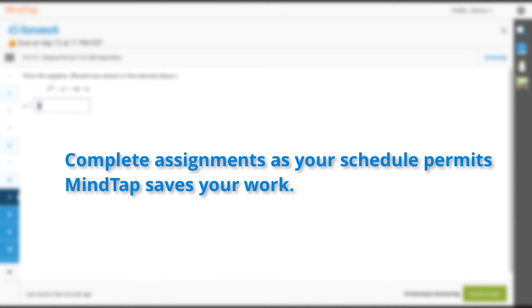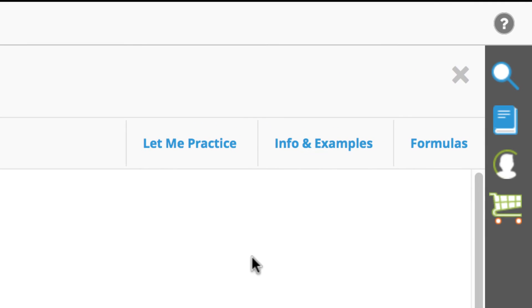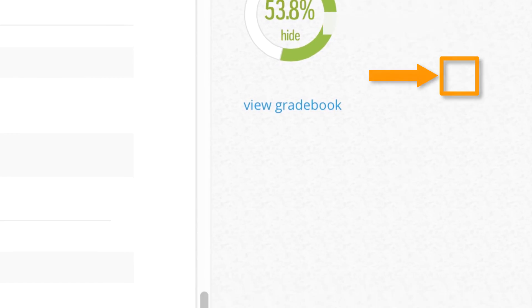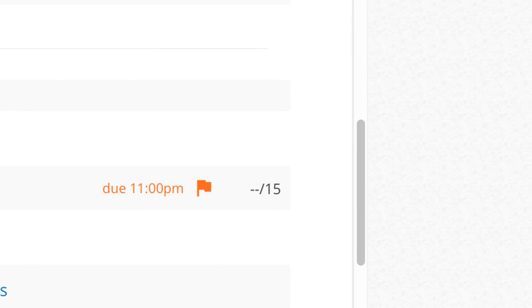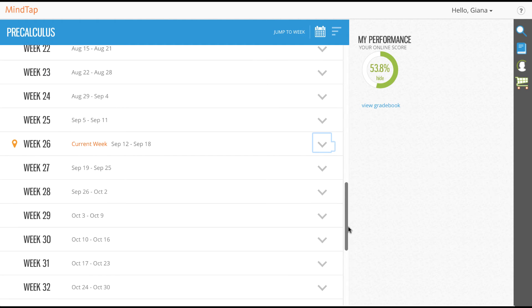You can work a few problems and log in later to complete the rest as your schedule permits. When you've completed the assignment, simply close out. There's no need to hit Submit Assignment because MindTap saves your work. Once the due date or time for the assignment passes, your work is submitted for final grading and your score is recorded in the Gradebook within the Progress app.